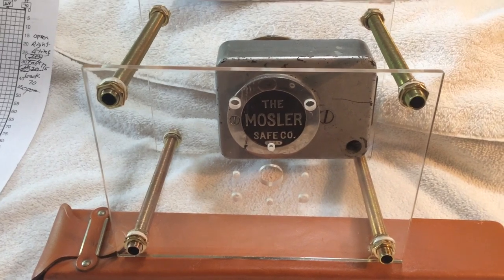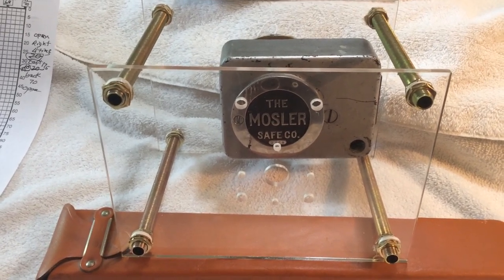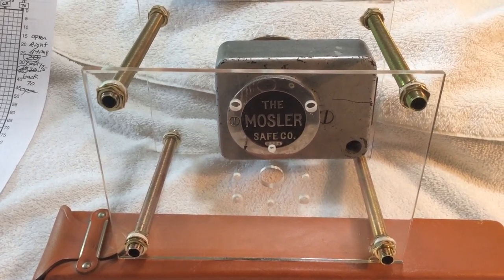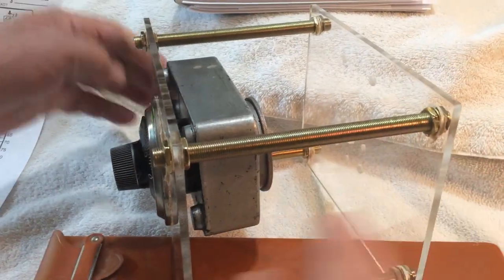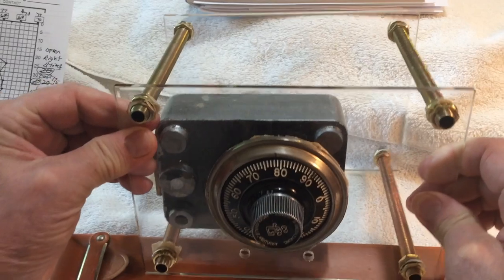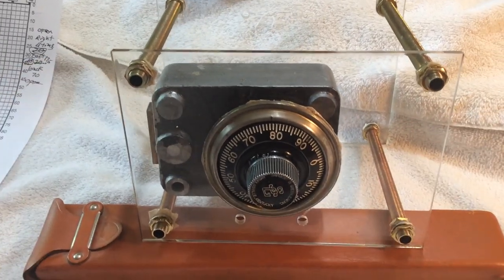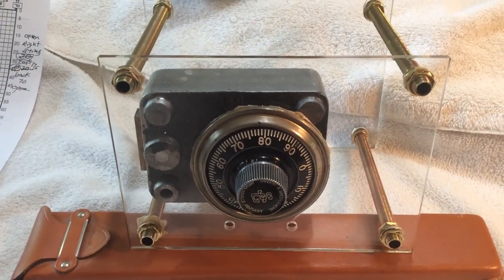But this is a Mosler lock and it is a friction lock, so we use the same techniques that we used yesterday on the Yale lock. I'll show you the chart that we ran.